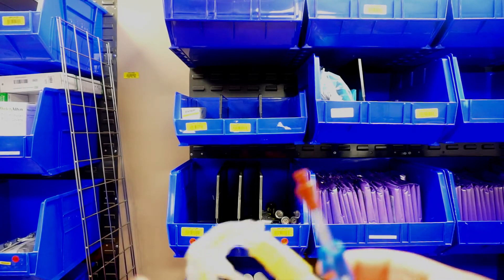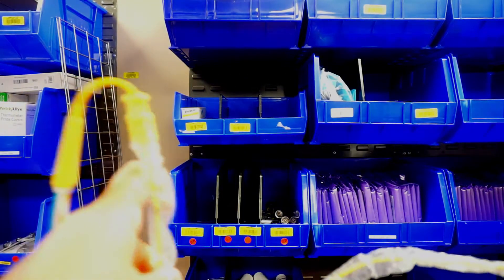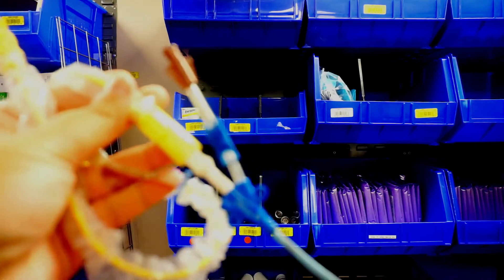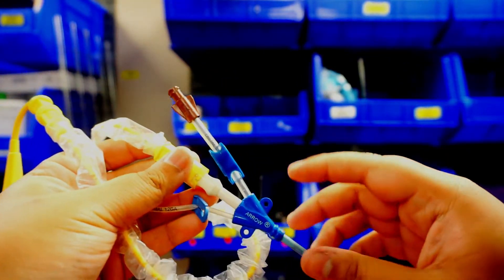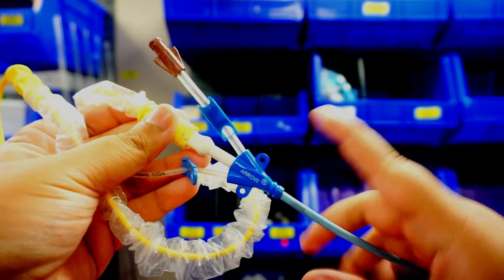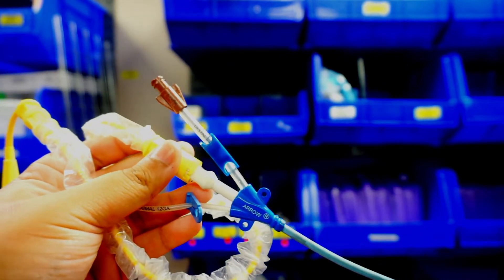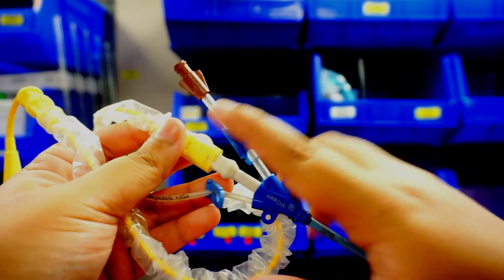So as a refresher, you have your Swan line that's going to be connected to your Cordis here and your white port here. It's going to be sutured in place, hopefully your line is sutured in place, and we want to take the Swan out.